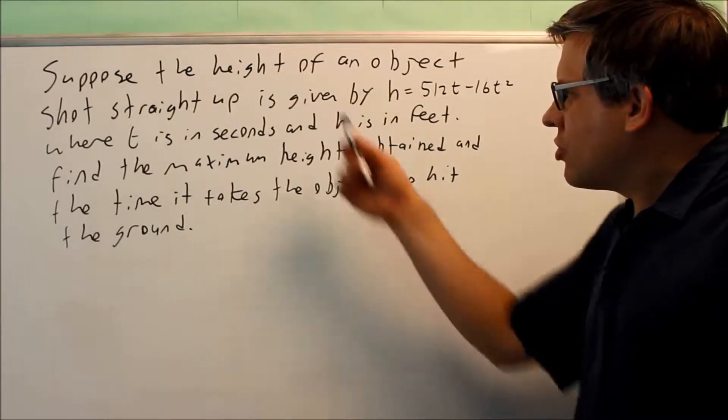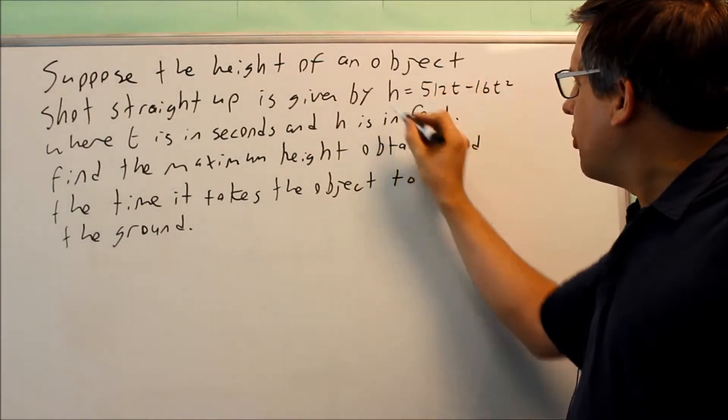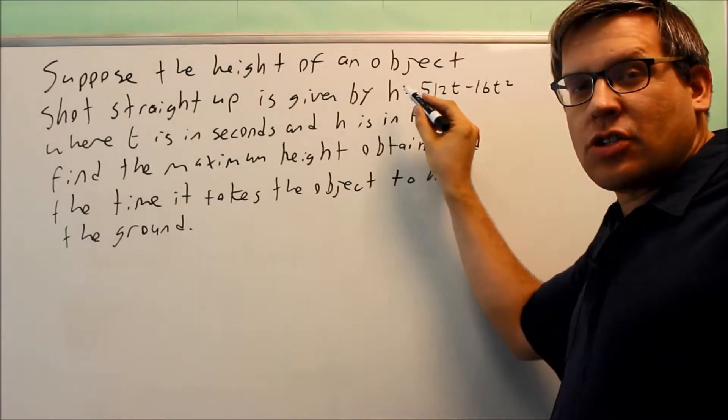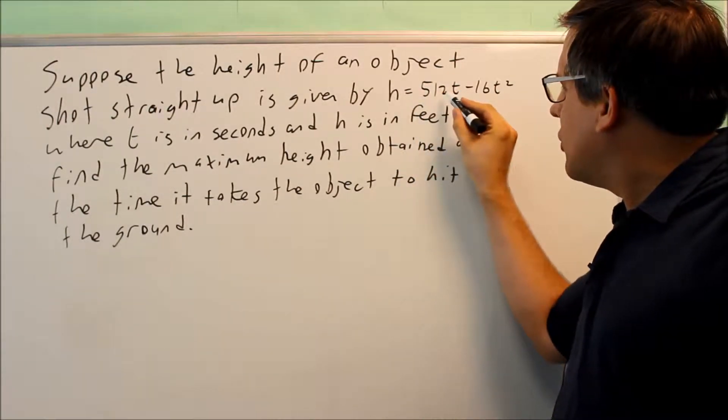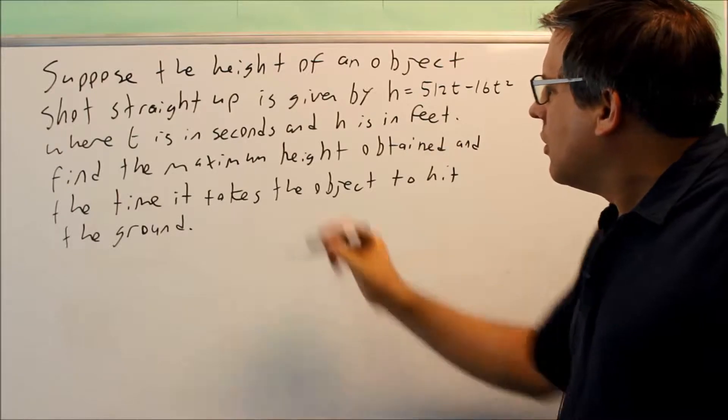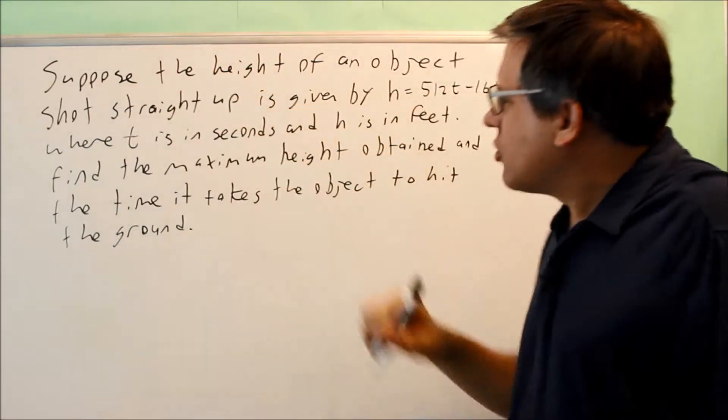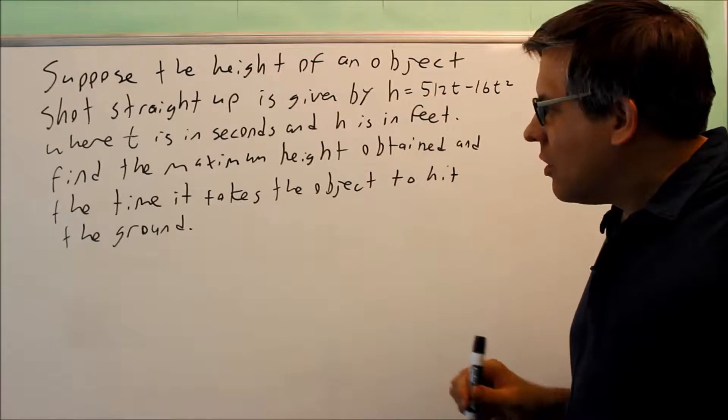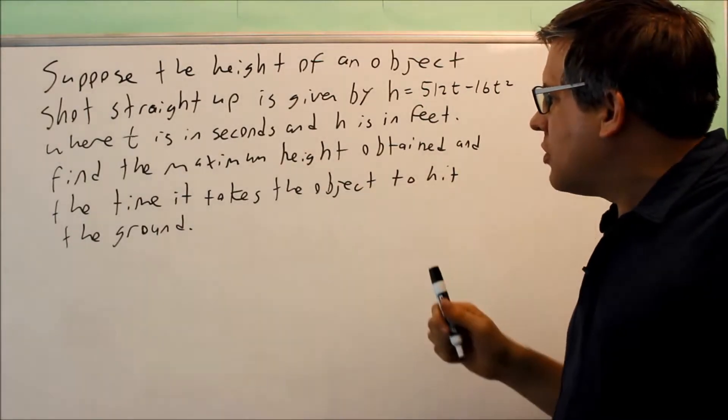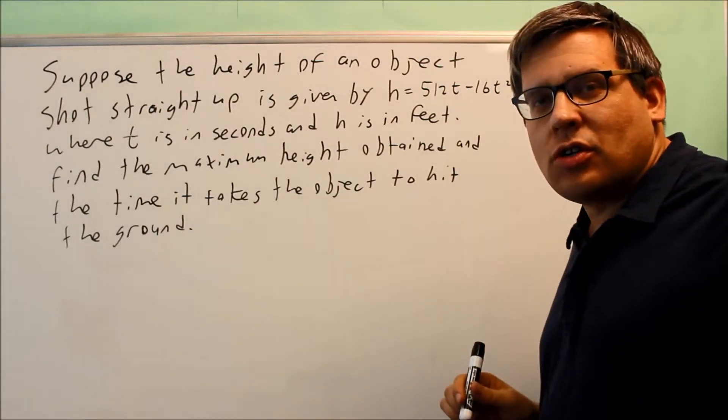Suppose the height of an object shot straight up is given by this formula: h(t) = 512t - 16t². t is measured in seconds and h is measured in feet. They're asking us to find the maximum height obtained and the time it takes the object to hit the ground.